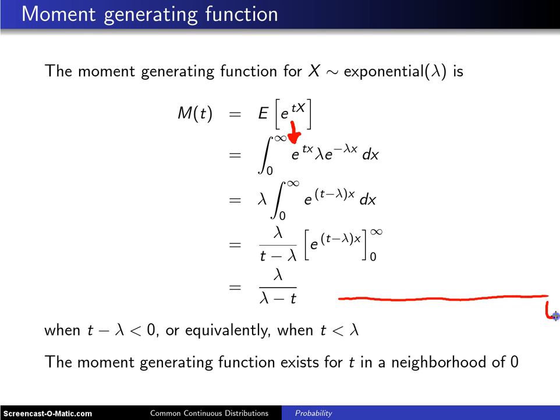So here is a t axis and here is lambda and here is 0. And one of the requirements for a moment generating function to exist is it has to exist in a neighborhood about 0.